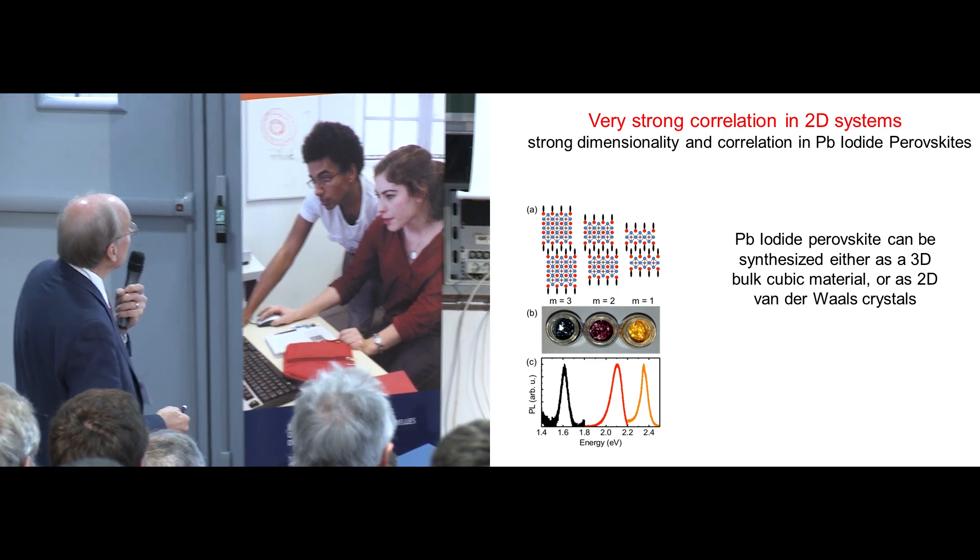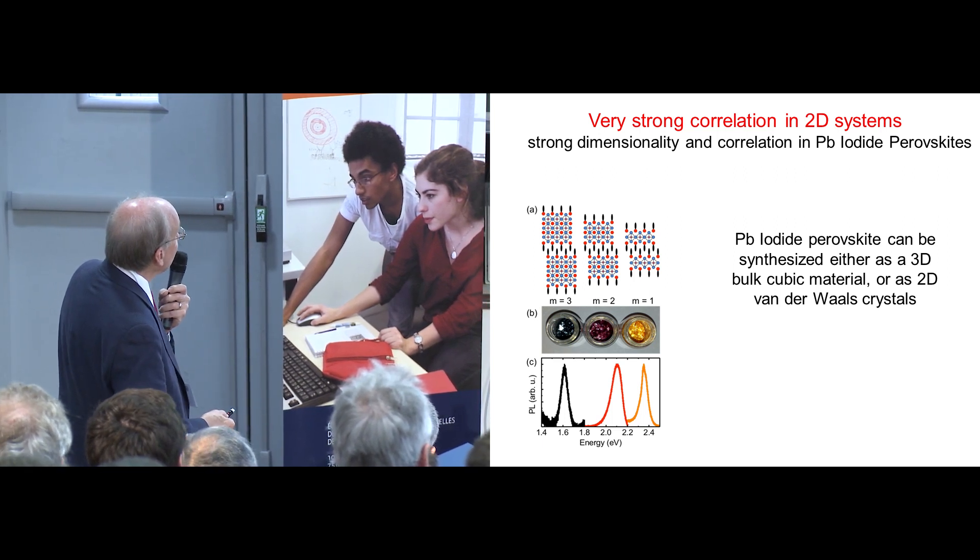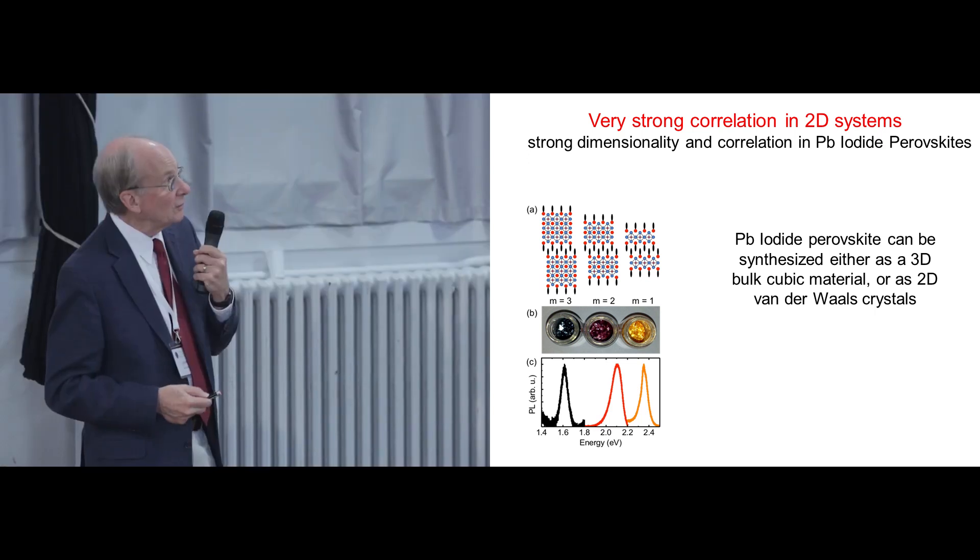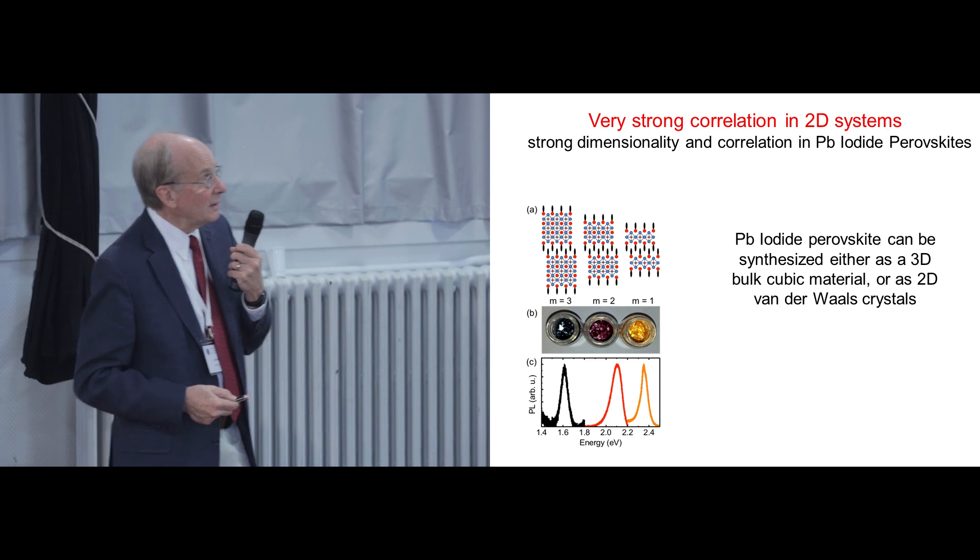And so these cartoons are meant to be - these are, say, octylammonium ions, it's a van der Waals system. This is one perovskite, this is the lead iodide perovskite, single layer, two layers thick, three layers thick. All of these can be made. They're being made in John Owen's lab.